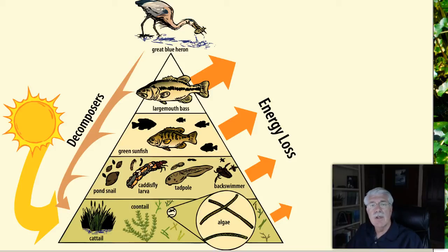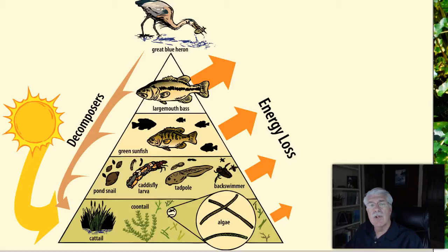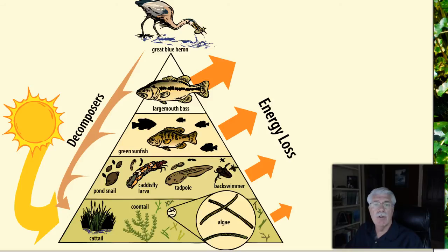Some energy is lost at each step away from the source of energy, and the ultimate source of energy is the sun. The groups of organisms that occupy the same position in a food chain, such as the producers and consumers, are called trophic levels. Trophic levels describe the steps in the energy pyramid and the organism's roles at each level. Only a little of the sun's energy passes from one trophic level to the next. Animals lose energy doing tasks such as hunting and keeping their bodies warm.